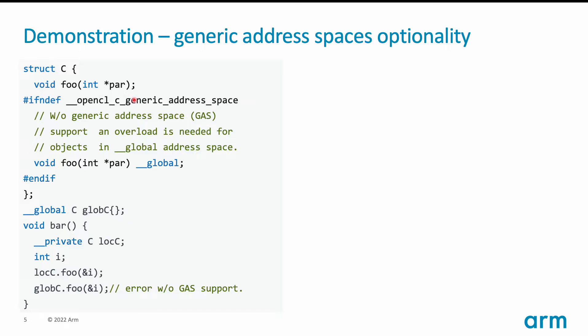If we don't have generic address space supported, the first overload of foo will default to private address space. That will be a problem for the call into foo with a global address space object, because global is not convertible to private address space. To circumvent this problem, we can simply declare a second overload of foo qualified with global address space. Now there will be no problem.